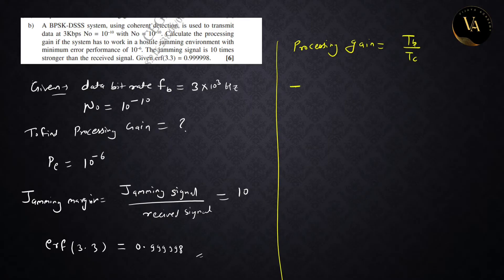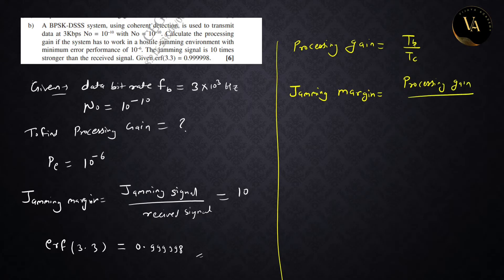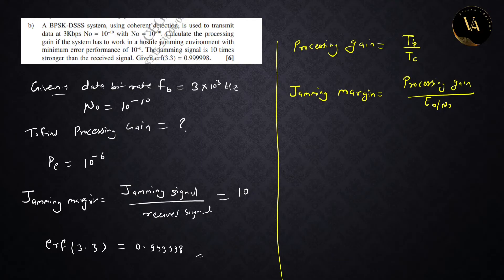And what is given here? Jamming margin is given. We will find the jamming margin. We will find eb upon n0.